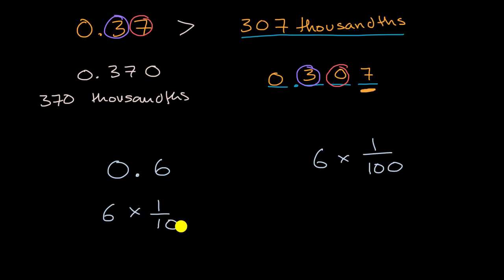Well, a tenth is 10 times larger than a hundredth. So because this is 10 times larger than that, if you multiply it by six, well, this is going to be a larger quantity. So we could go and say, hey, this is greater than that.